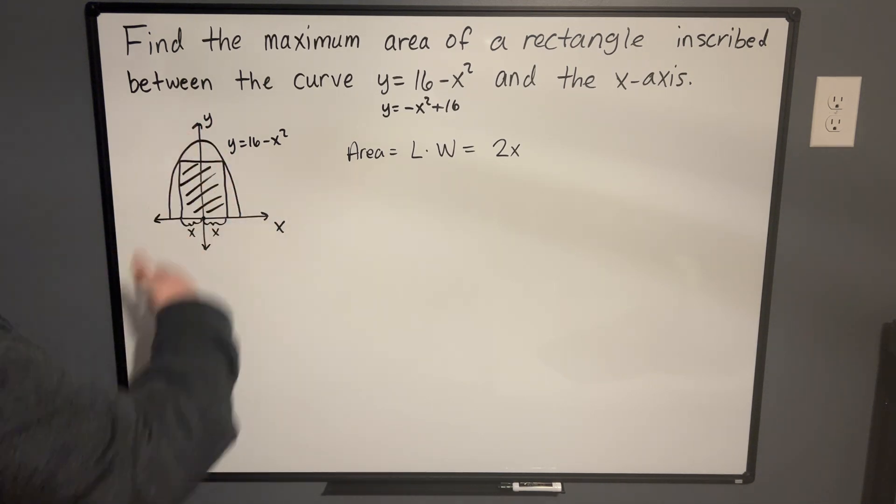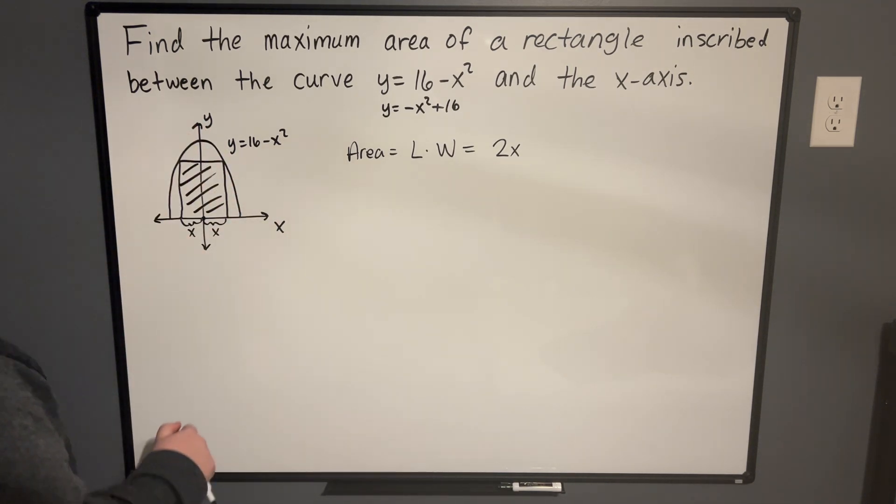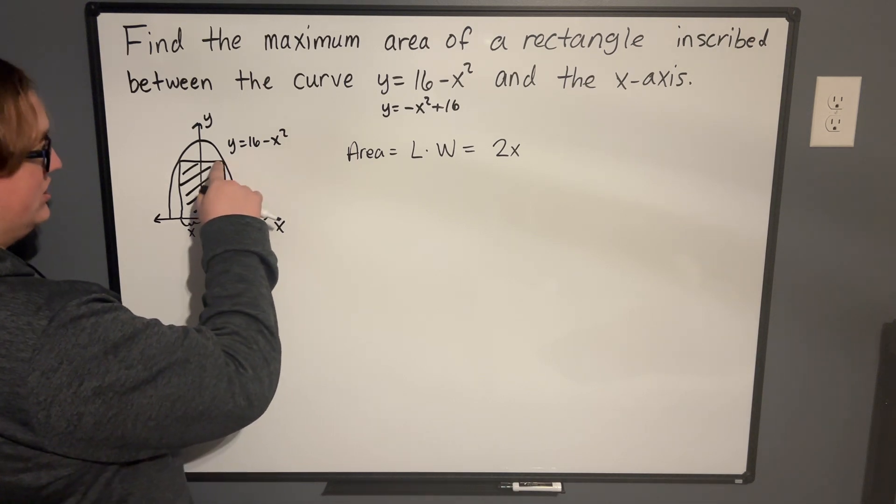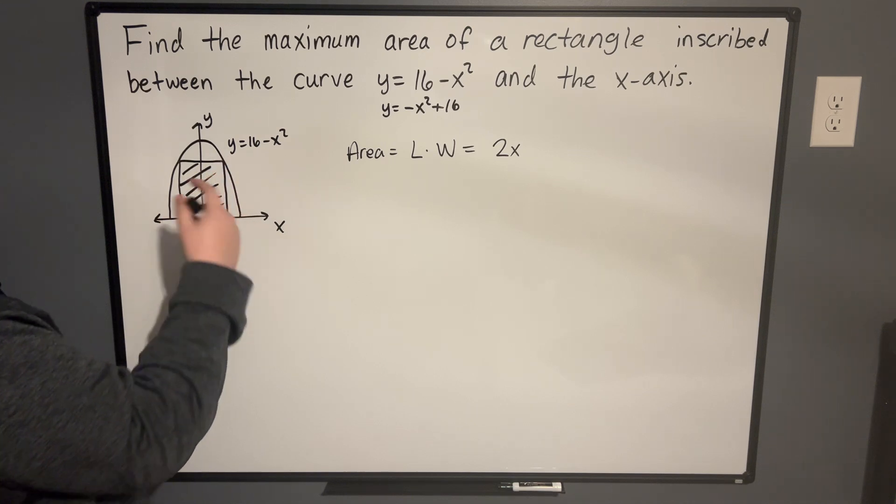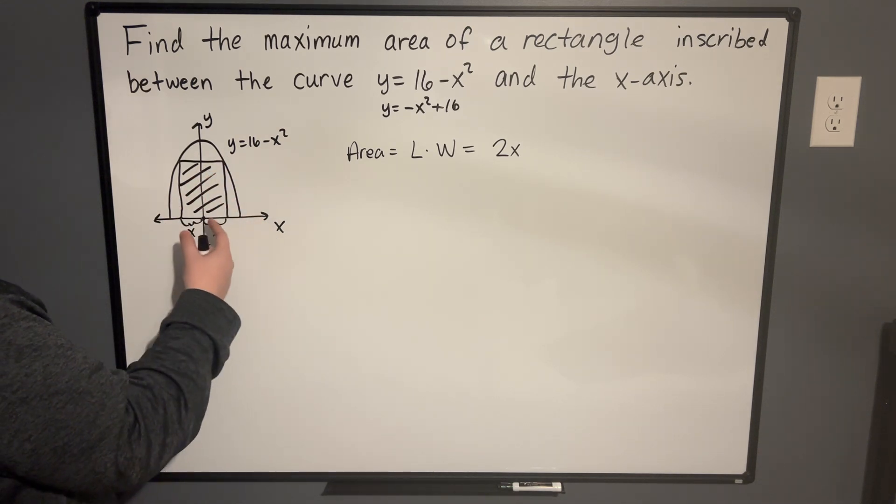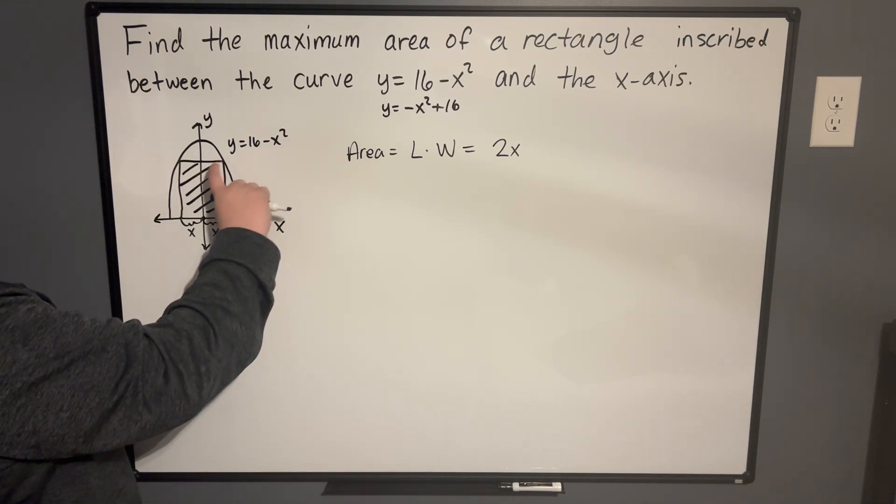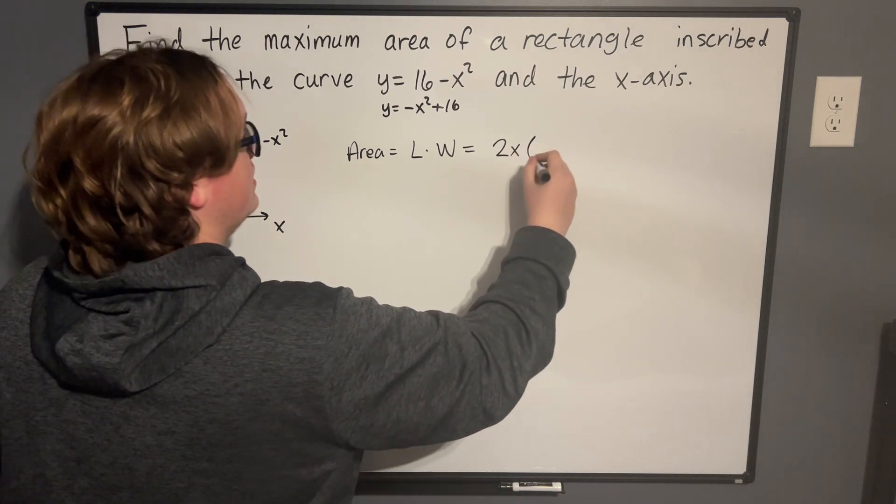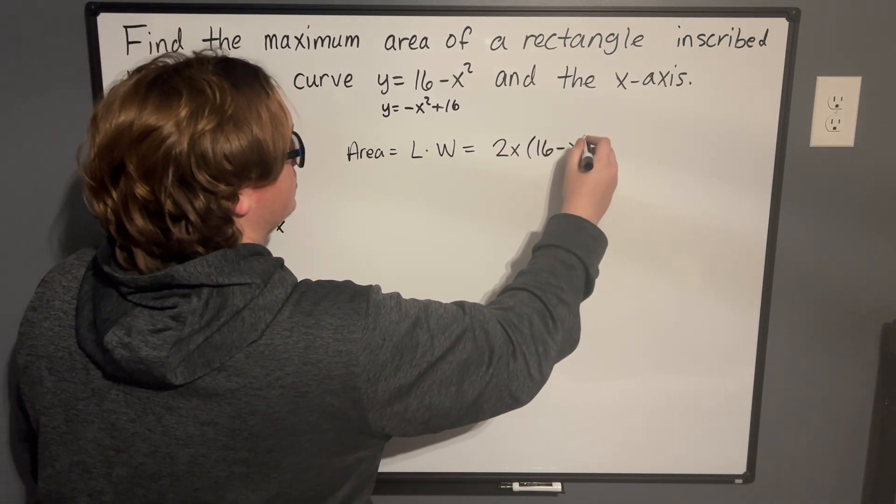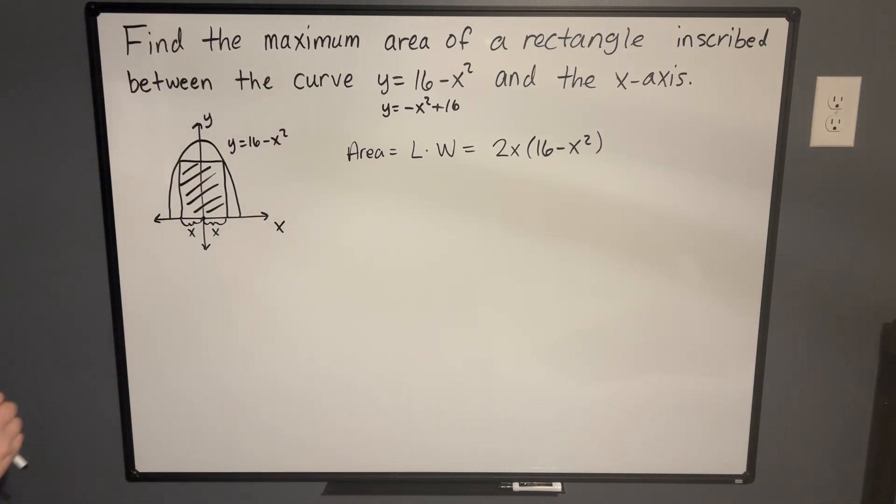And now we need to multiply by this height portion, the length of the rectangle. Well, we know that this is touching this y equals 16 minus x squared. So whatever this x value is, it goes up to the y value that's associated with it. So the y value or the length of this side is just going to be the actual function that we have. So it's times 16 minus x squared.